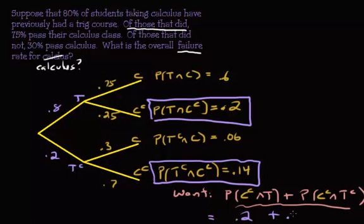And so what we're going to do is just add these two together. So 0.2 plus 0.14. That is 0.34. And then you can write this as a percentage because it wants the failure rate and the choices in this question. Because this is a multiple choice question.